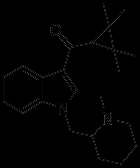AB005 features groups found in other previously reported synthetic cannabinoids: the tetramethylcyclopropane group of ER144 and XLR11, as well as the 1-methyl-2-piperidinol methyl substituent of AM1248 and AM1220.